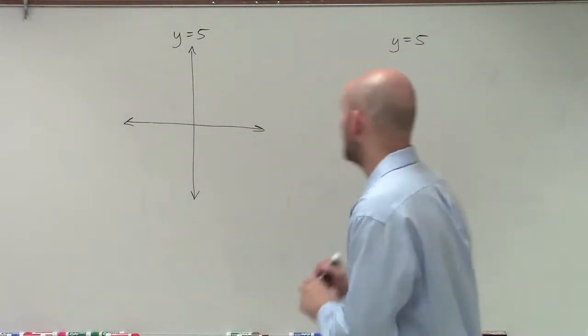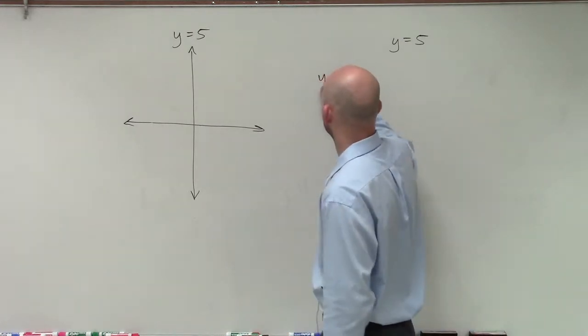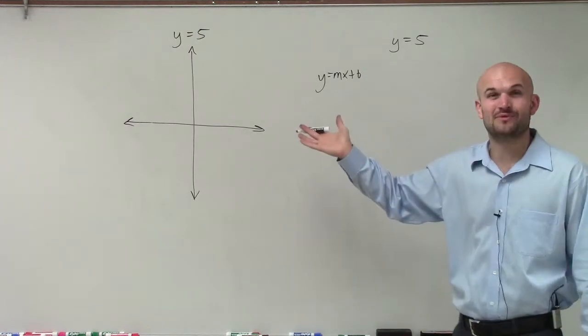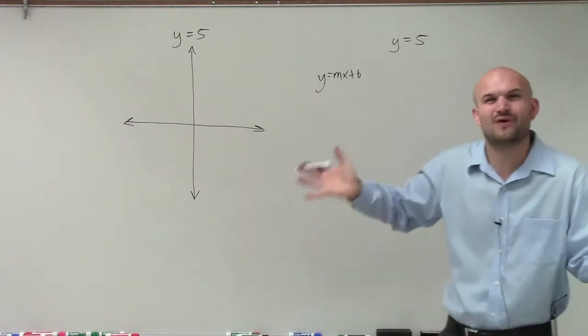This one gets a lot of students because when we talk about graphing in y equals mx plus b form, you see, well, I don't see an m or x. All I see is this 5. How do I graph this?